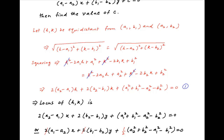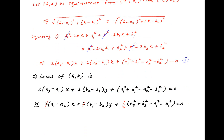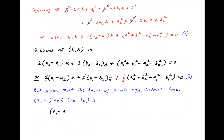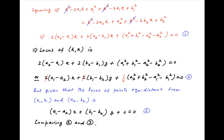Dividing both sides by 2, we get the equation of the locus. We are given that the locus of points equidistant from (a1, b1) and (a2, b2) is: (a1 minus a2) times x plus (b1 minus b2) times y plus c equals 0. Comparing this with the equation obtained above, we get c is equal to half of (a2 squared plus b2 squared minus a1 squared minus b1 squared), which is the required answer.